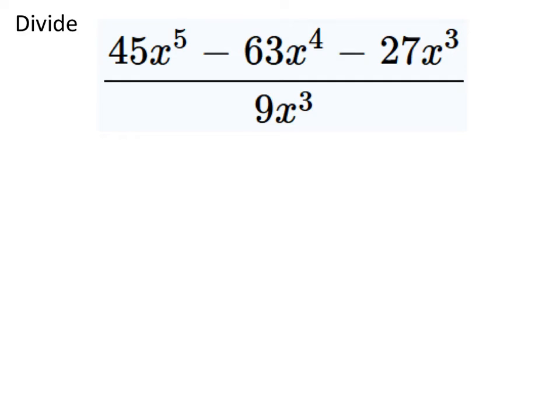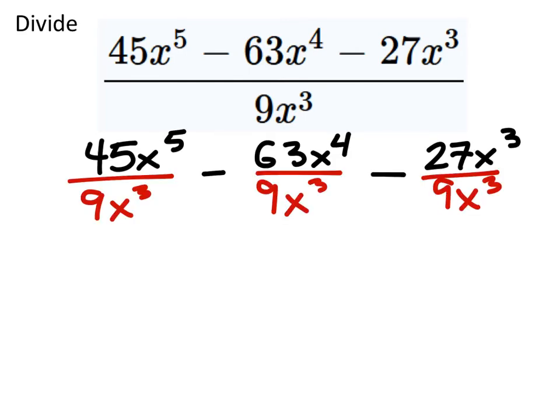Something like this. I see each of the terms in the numerator have x's, and not only that, but there are also multiples of 9. So I'm going to want to divide each of these individually by the denominator. So I'm going to split this up into three separate fractions. This is my new equivalent expression.